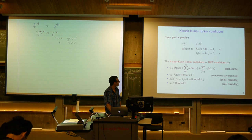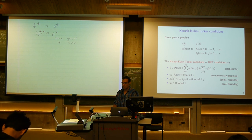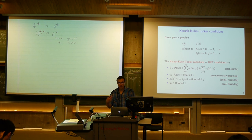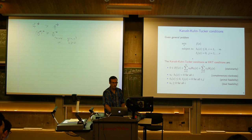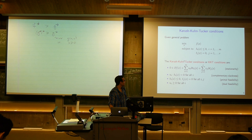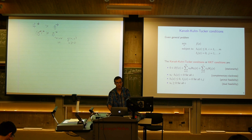The KKT conditions, like duality, are very simple in a sense. All the arguments in today's lecture are very simple, but at least they're very profound — a bunch of really simple arguments lead to something quite powerful. We're looking at the same general form optimization problem, not necessarily convex. The KKT conditions are a set of four conditions that associate with a particular problem.